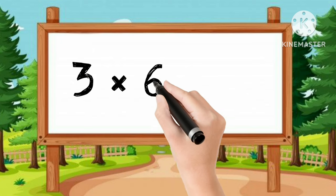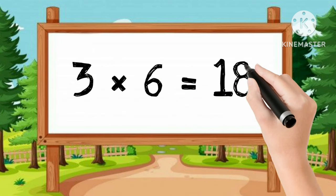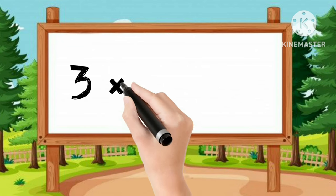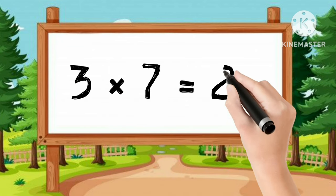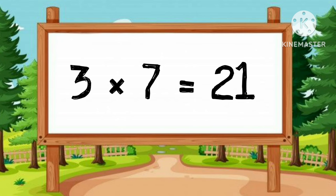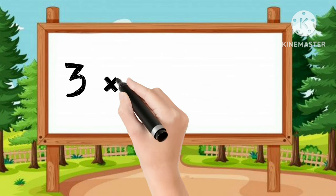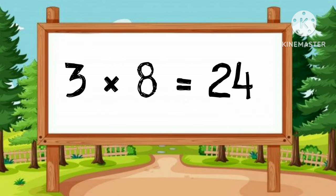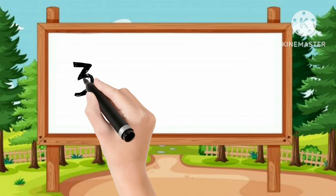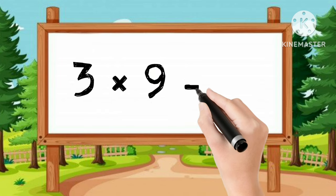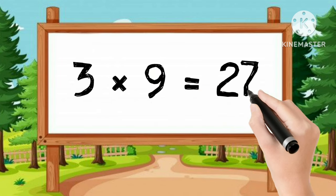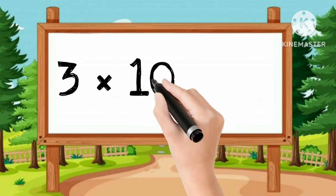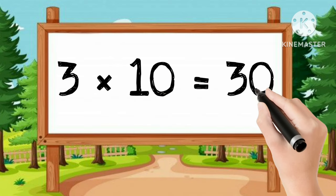3-6s are 18. 3-7s are 21. 3-8s are 24. 3-9s are 27. 3-10s are 30.